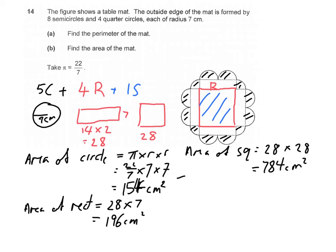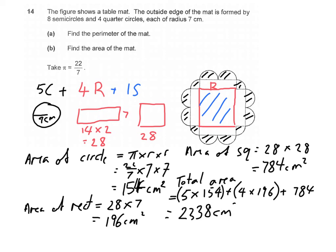And to find the area of the mat, it will be just 5 circles. So 5 times 154, plus 4 rectangles, 4 times 196, plus the square, 784. Using our calculator, we find that the answer adds up to 2338 cm².